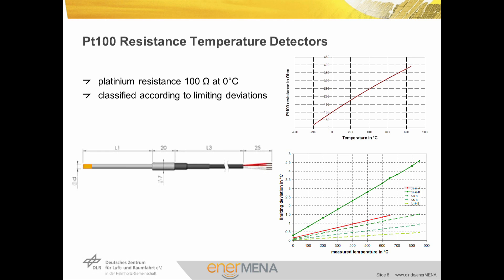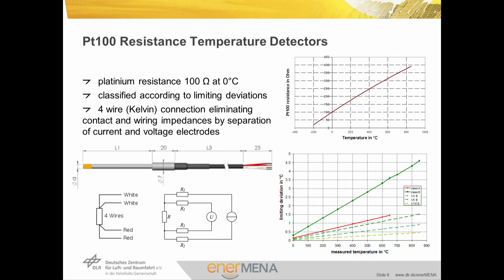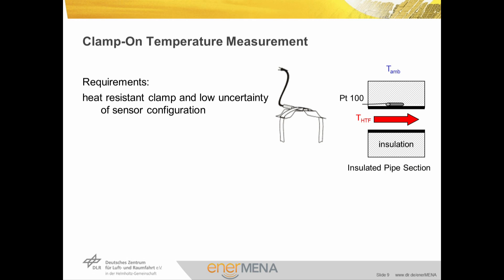A four-wire connection of the sensor to the evaluation unit eliminates the influence of contact and wiring impedances by separating the current and voltage electrodes. In order to use PT100 sensors for clamp-on temperature measurements, two main requirements need to be fulfilled: first, heat-resistant and robust clamp-on installations are needed to fix the sensor to the piping; and second, a sensor configuration with low measurement uncertainty is to be conceived.